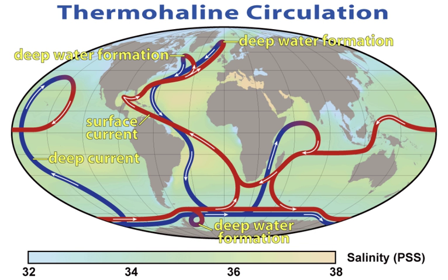Ocean acidification describes the decrease in ocean pH that is caused by anthropogenic carbon dioxide emissions into the atmosphere. Seawater is slightly alkaline and had a pre-industrial pH of about 8.2. More recently, anthropogenic activities have steadily increased the carbon dioxide content of the atmosphere. About 30–40% of the added CO2 is absorbed by the oceans, forming carbonic acid and lowering the pH through ocean acidification.